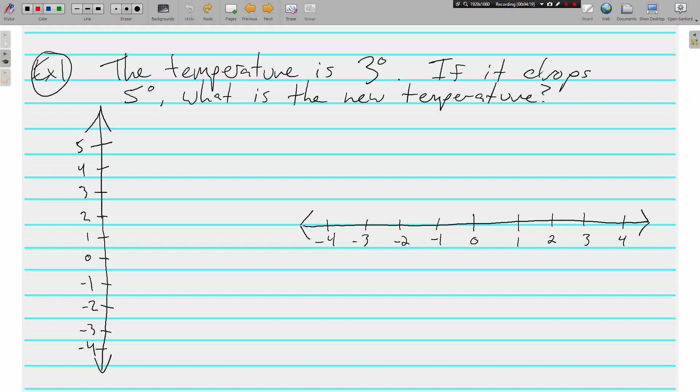Well, I would think that the three degrees that we're starting at is fairly important. And right here, the word drops. Drops. The temperature is going to drop. If it drops, which way are we going to go on the number line? How often do you drop something and it goes up? Not very often, unless it's lighter than air. But we're going to drop, so we're going to move down the number line.